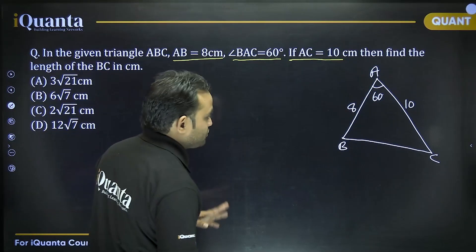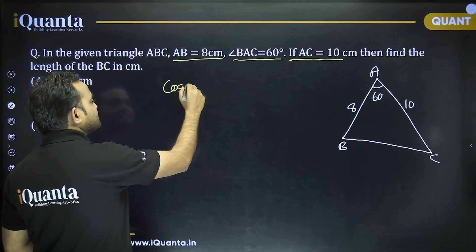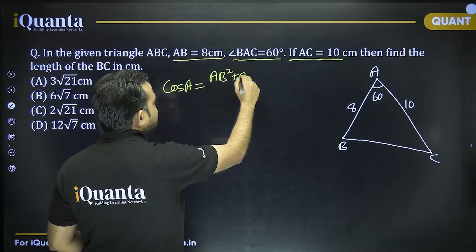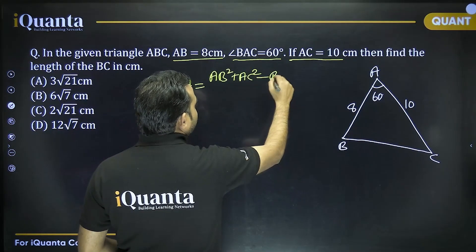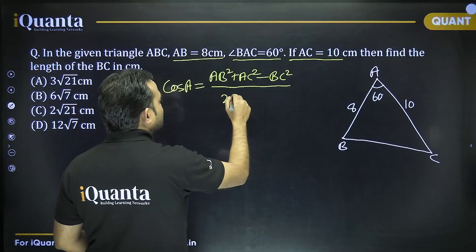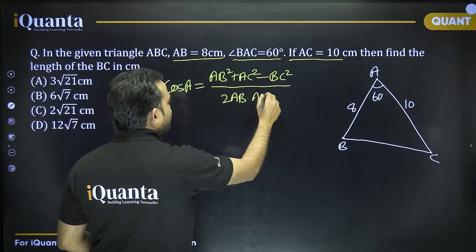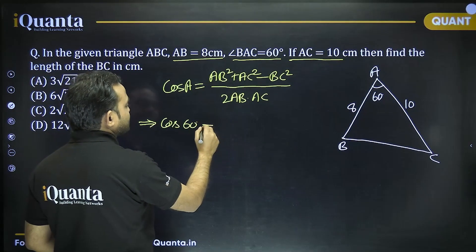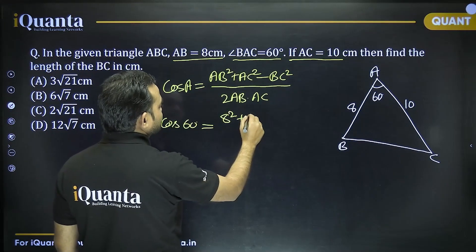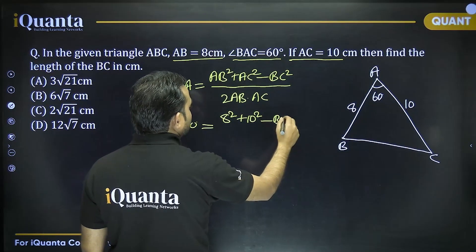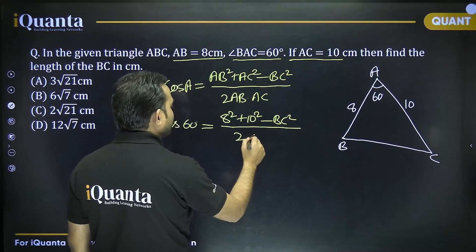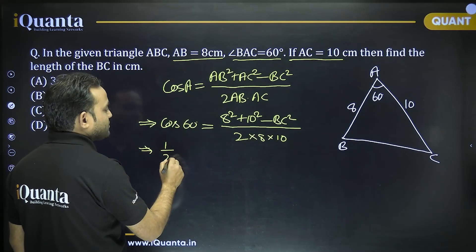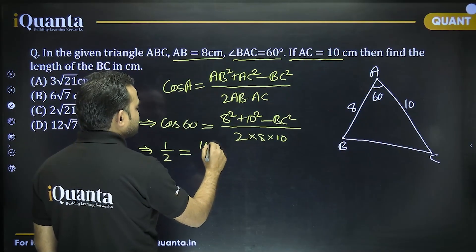We use the cosine rule: cos A = (AB² + AC² − BC²) / (2 × AB × AC). Substituting: cos 60° = (64 + 100 − BC²) / (2 × 8 × 10) = (164 − BC²) / 160.